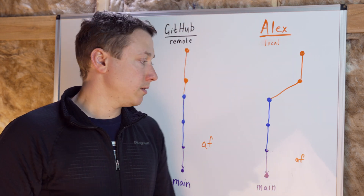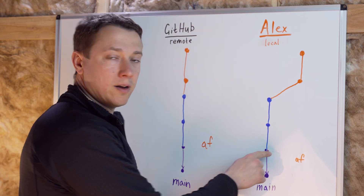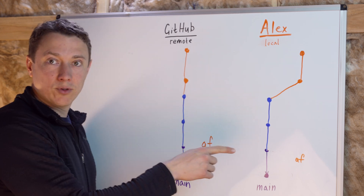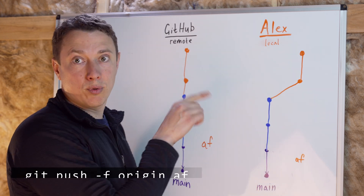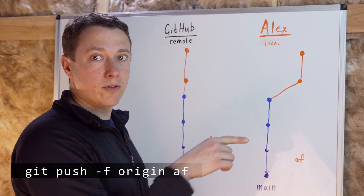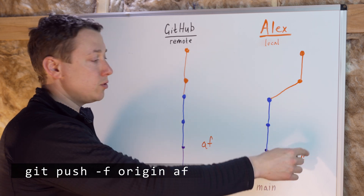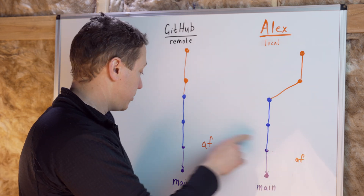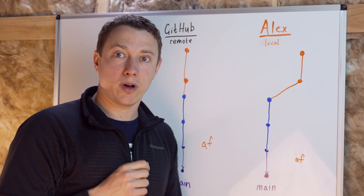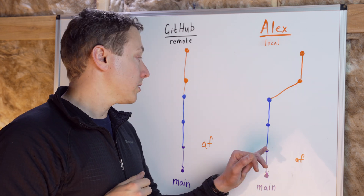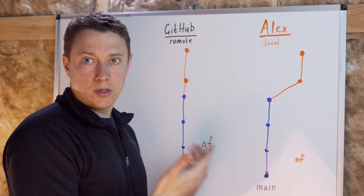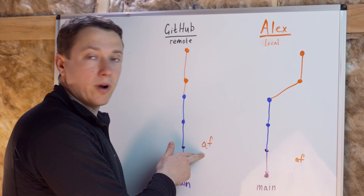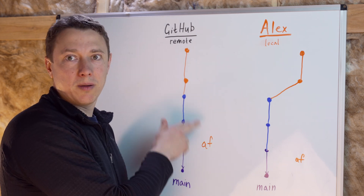If you previously pushed your unrebased feature branch onto the remote, you're going to have to use git push -f origin AF to force push your copy of your feature branch to the remote. If you did not push your branch before the rebase, then you won't have to use force push. You could simply use git push and that'll create a brand new branch with the same name on the remote.